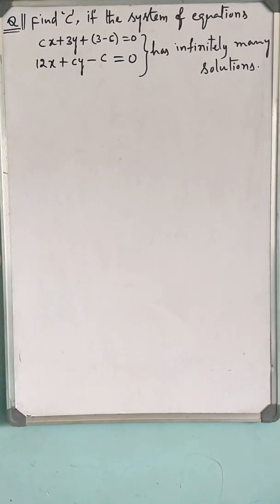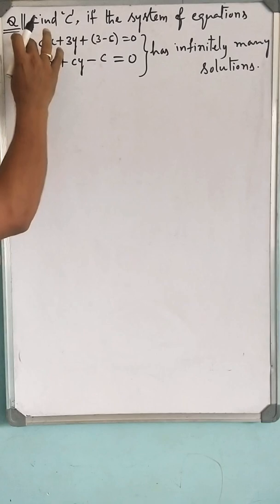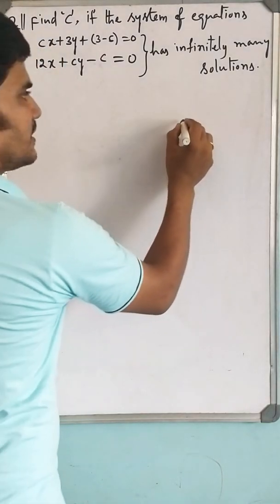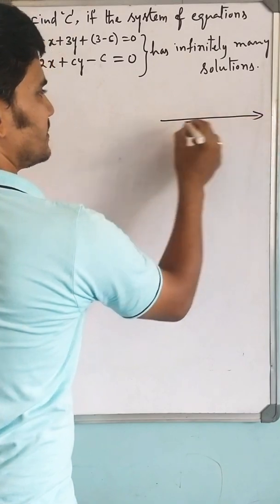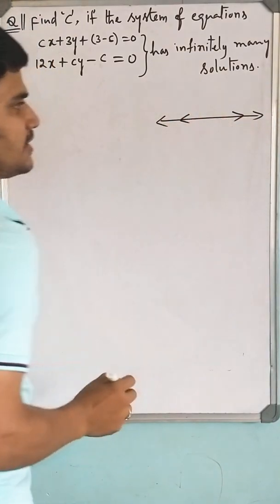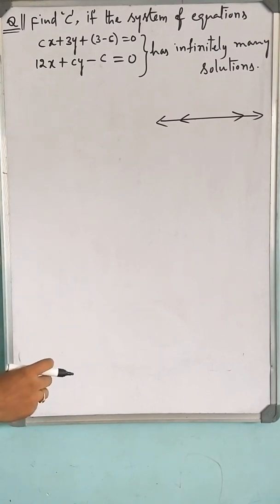As you know, if two equations have infinitely many solutions, they represent coinciding lines. They should have coincided with each other. That means they are dependent equations.